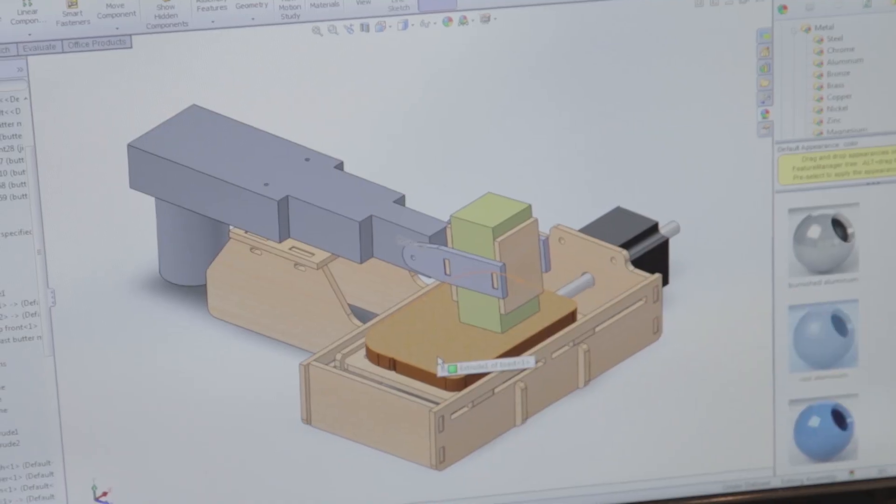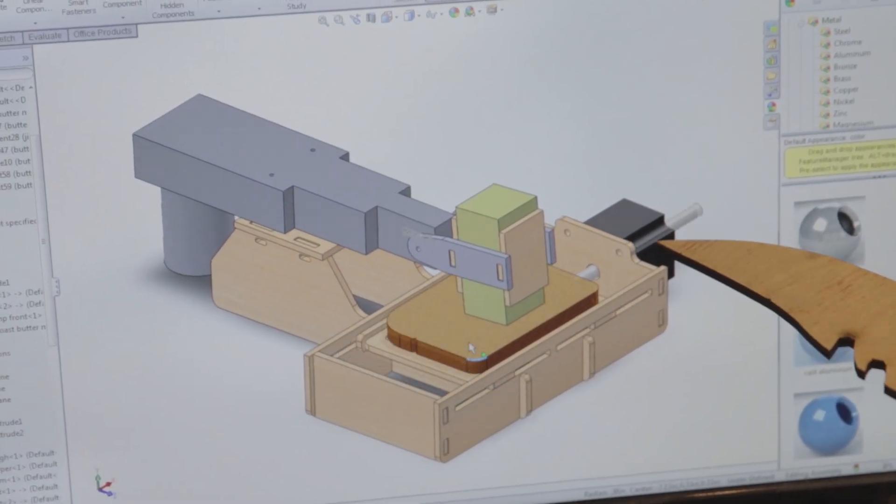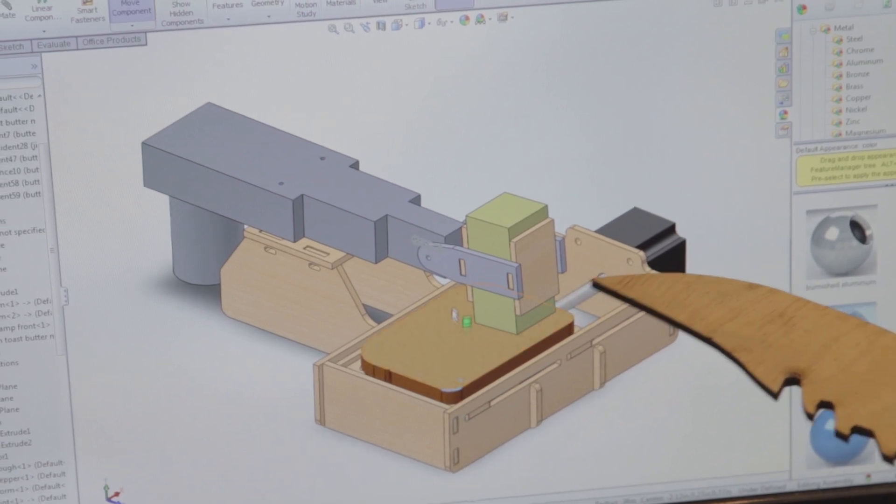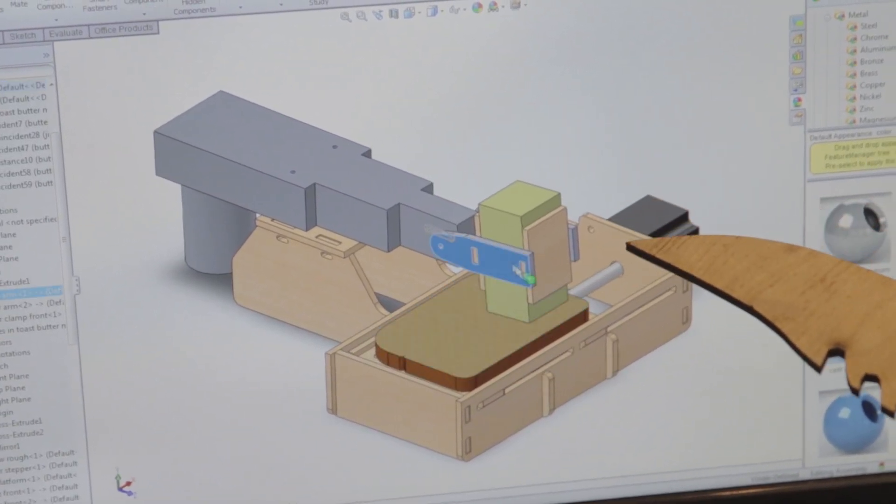Here's the CAD model to give you a general idea of what's going on. The linear stepper motor will move the toast back and forth for buttering and the jigsaw motor will move the butter back and forth for buttering.